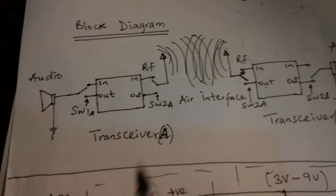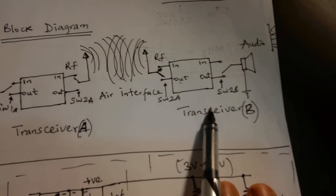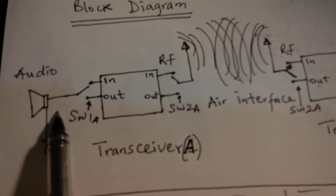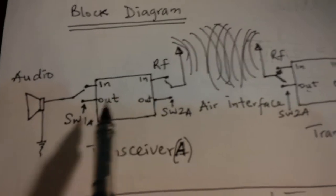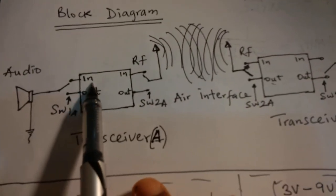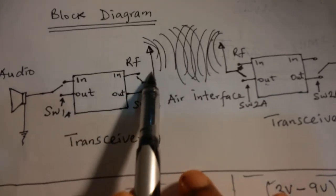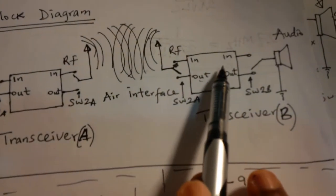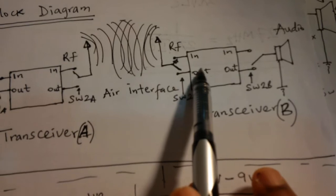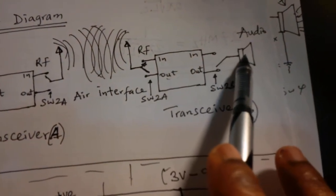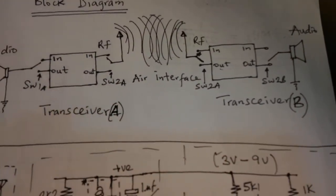This is the basic block diagram. You have a transceiver A and a transceiver B. And this is how it works. There's an audio source or an audio transducer to each of the transceivers. The signal goes in through one path, through the in-path, and the signal comes out through the RF path. It goes through the air interface to the other transceiver. The signal is received from the transceiver and goes out through the audio transducer. This is pretty much how your walkie-talkie works.